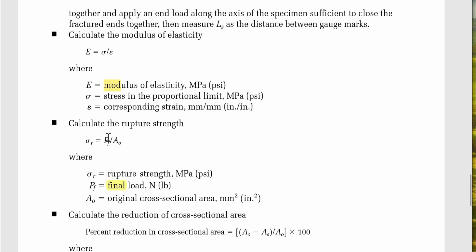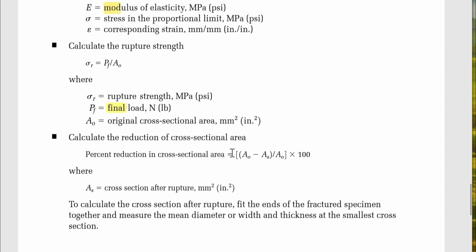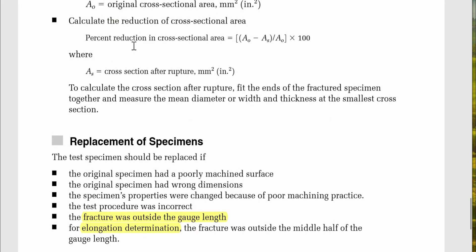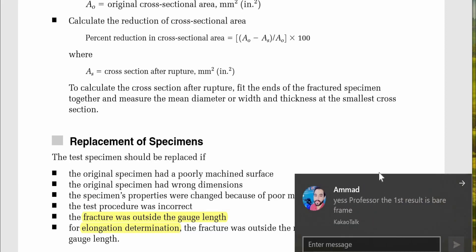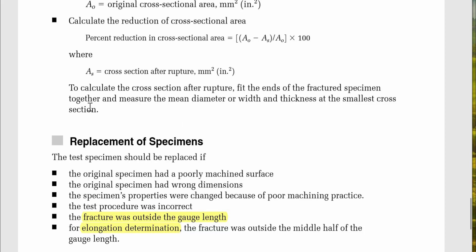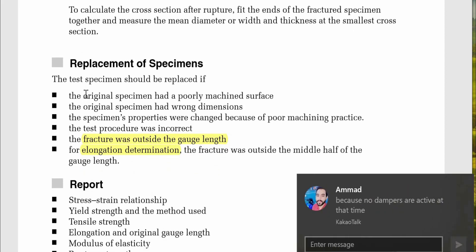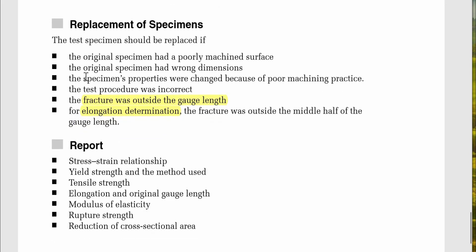Calculate the rupture strength: σ_R = P_F / A₀, where σ_R is the rupture strength in MPa, P_F is the final load in Newtons, and A₀ is the original cross-sectional area in mm². Calculate the percent reduction in cross-sectional area: (A₀ − A_S) / A₀ × 100%, where A_S is the cross-sectional area after rupture in mm². To find A_S, fit the fractured ends together and measure the minimum diameter or width and thickness at the smallest cross-section.